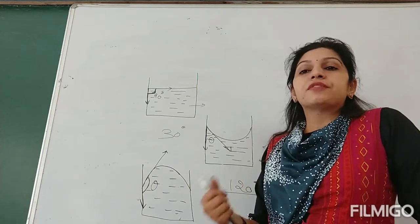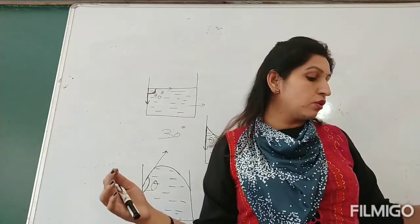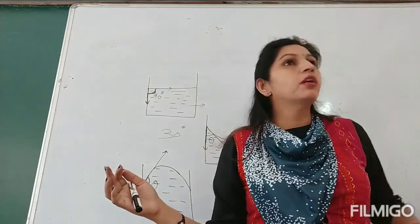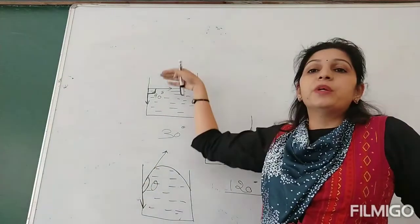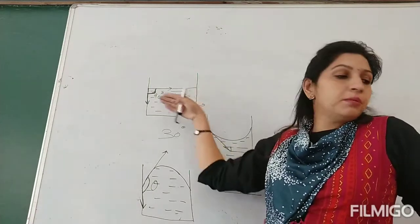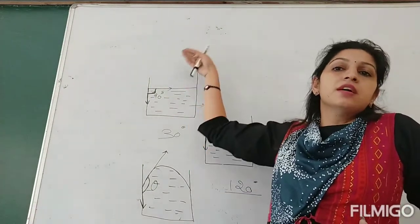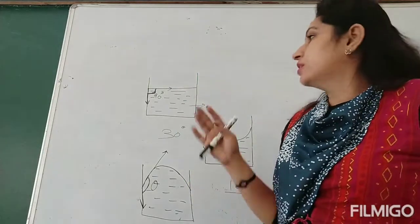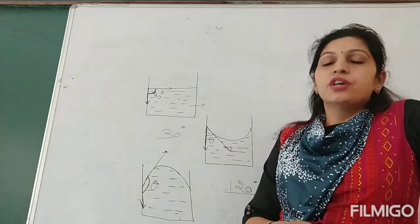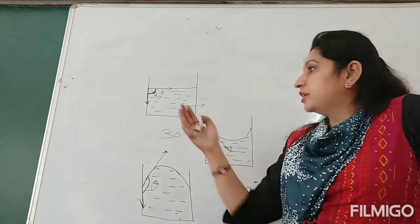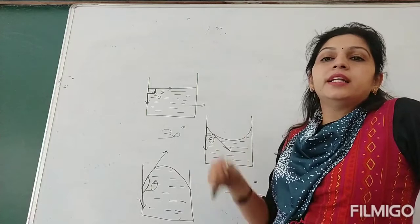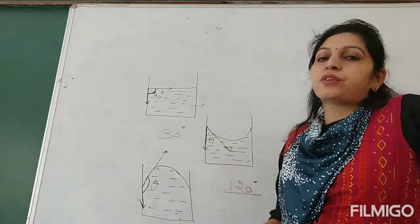The angle of contact also depends on the cleanliness of the surface — how clean the surface is matters. It also depends on the medium above the liquid: if there is excess pressure above the surface, the meniscus will be concave. And it depends on the temperature of the liquid — accordingly the angle of contact will change.